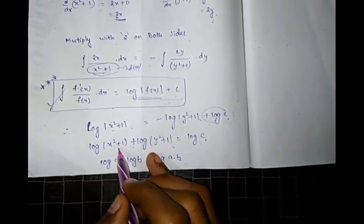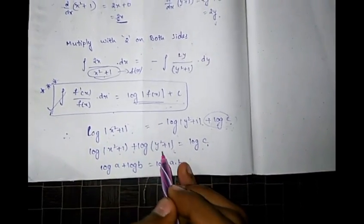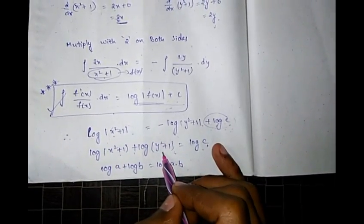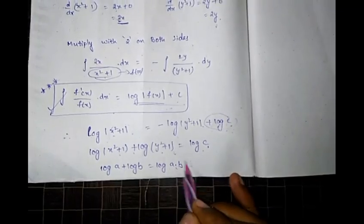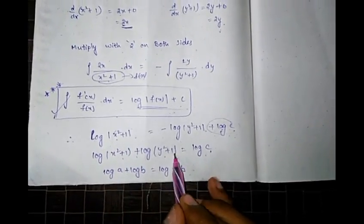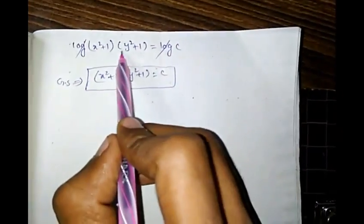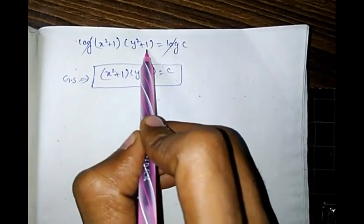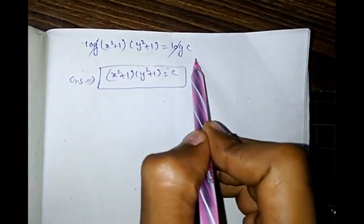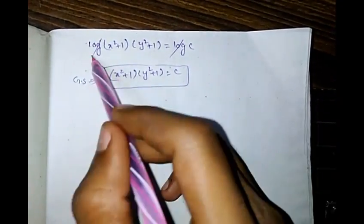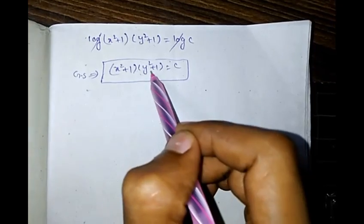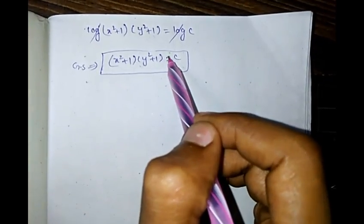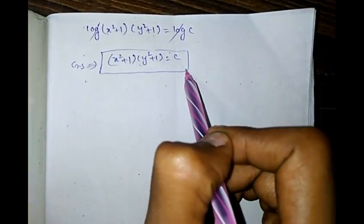Using the formula log a + log b = log(a·b), we get log((x²+1)(y²+1)) = log c. Cancelling log on both sides, the general solution is (x²+1)(y²+1) = c.